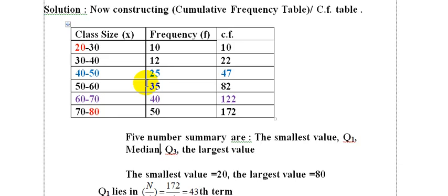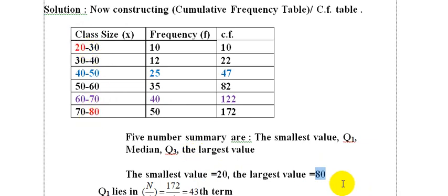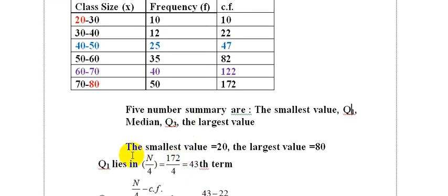The smallest value is 20 and the largest value is 80. Now we will find Q1, the median, and Q3. Q1 lies at the position N divided by 4.